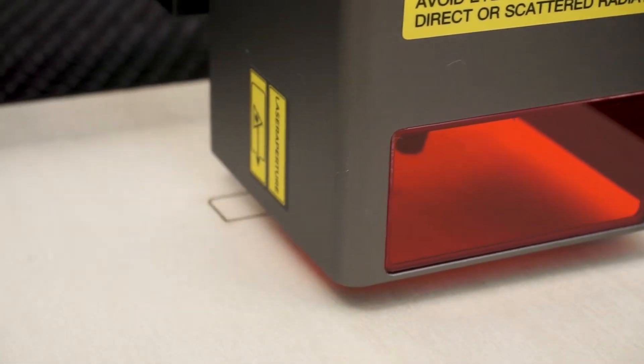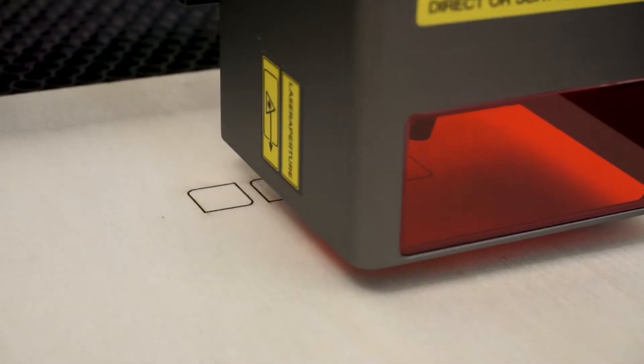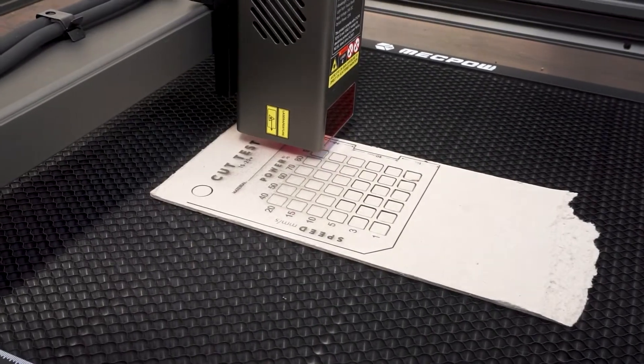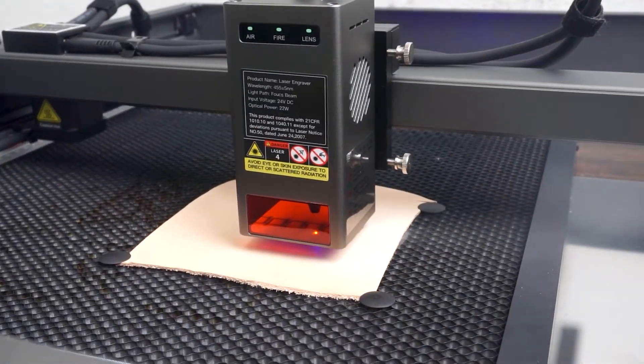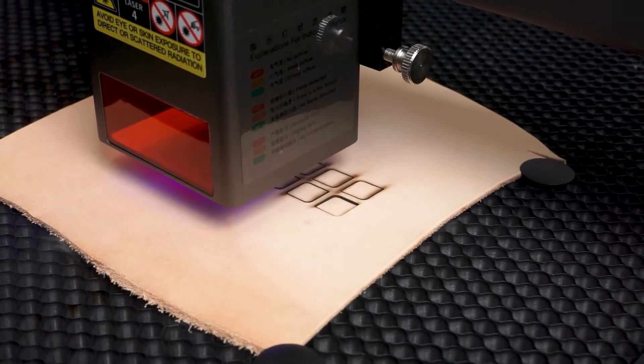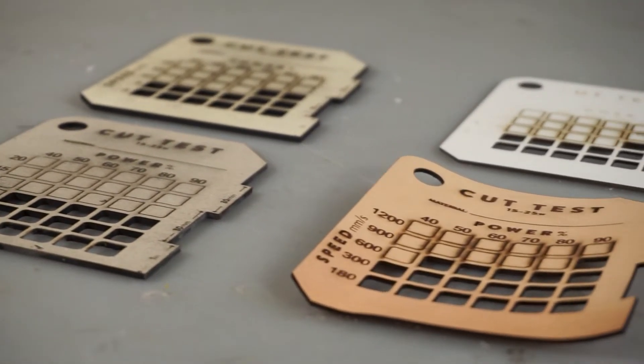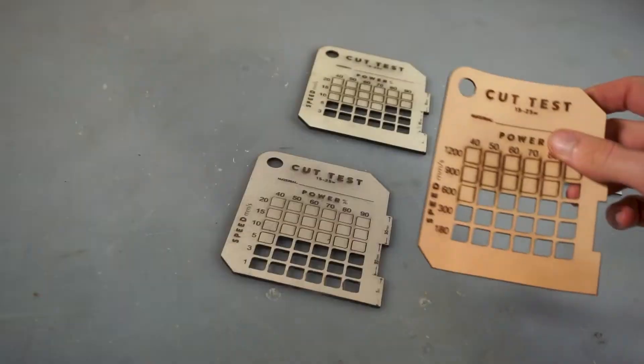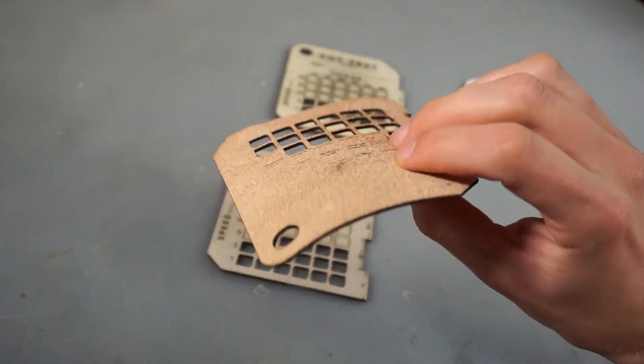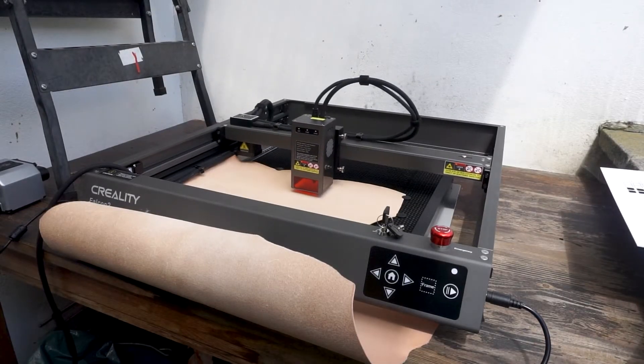I started by cutting these test files, so we have this matrix with the different possible settings, which we can keep as a reference and bring out every time we need to re-cut the same material. But now, let's move on to the real cuts.